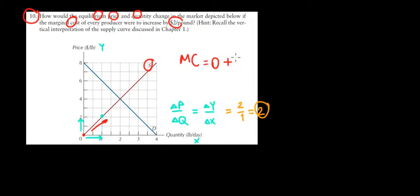So that's going to be the slope. So we have the marginal cost equal to 0 plus 2 times the quantity, which is 2 times the quantity. Now, if the marginal cost increases by $2 per pound, that means we're going to add plus 2. So the marginal cost increases by 2.